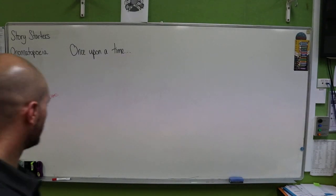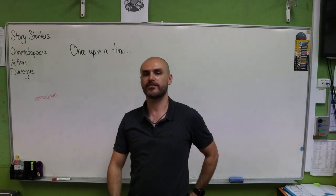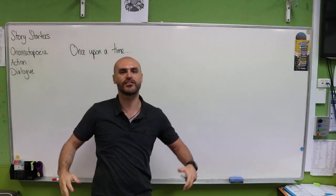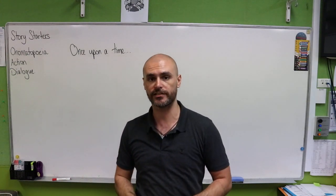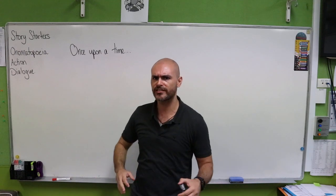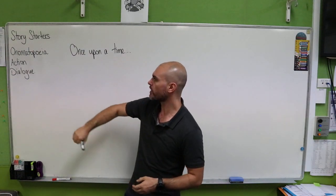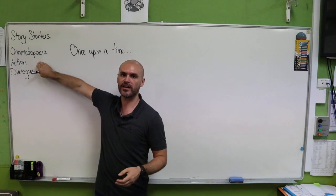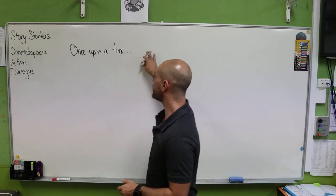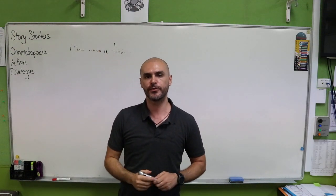Hello everybody! We have looked at the different ways that we can start stories. We've looked at Once Upon a Time and how it's not really the most exciting way to start our stories. When we're looking at the different ways that we can start our stories — the different story starters and the different ways that we can make them exciting — we have Onomatopoeia, action, and dialogue. So today we're looking at how to get rid of Once Upon a Time and how to introduce our story in a new and exciting way.